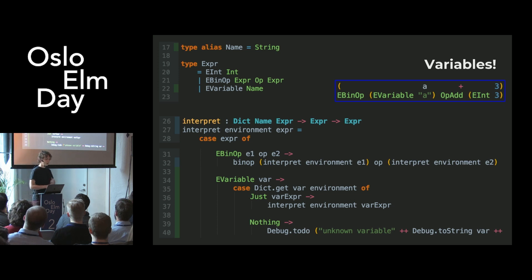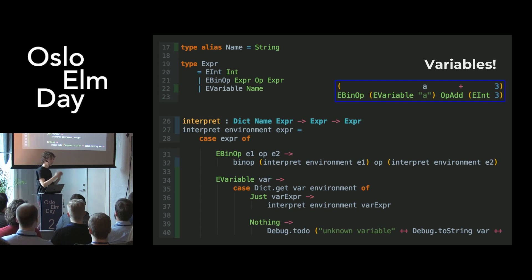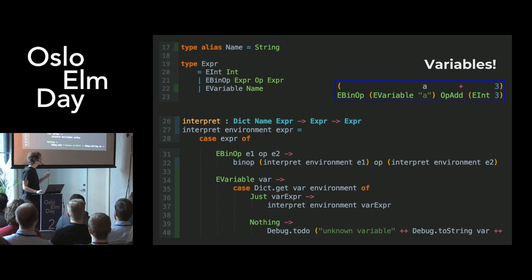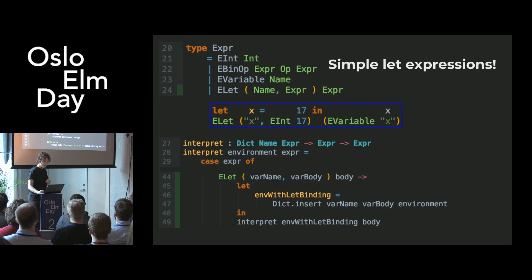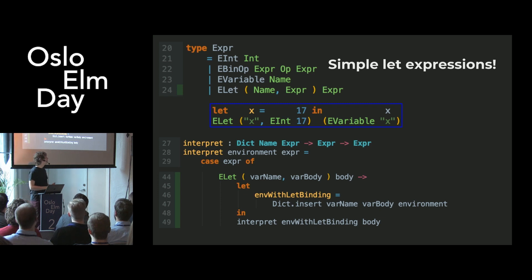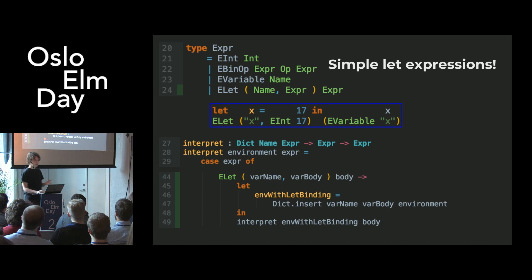To interpret a variable expression, we just do a lookup, and that should always succeed — otherwise we have a bug somewhere. Hence the `Debug.todo` calls; don't worry about those. We also need a way to introduce variables. We have simple let expressions where you can introduce a single variable, and if you want more variables you can nest them as deep as you want. The implementation is straightforward: insert the new variable binding and evaluate the body of the let expression.